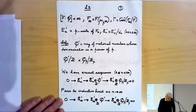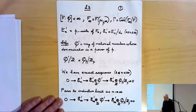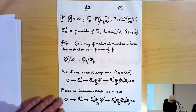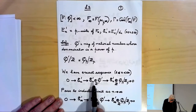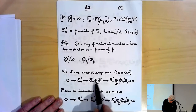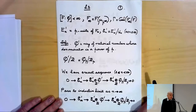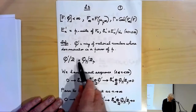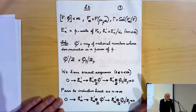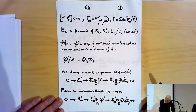Let's do it for n finite first. We look at the exact sequence: 0 → E_n' → E_n' ⊗ Q' → E_n' ⊗ (Q_p/Z_p), where the last term uses the fact that Q'/Z ≅ Q_p/Z_p. This exact sequence is exact because E_n' is a free finitely generated abelian group.